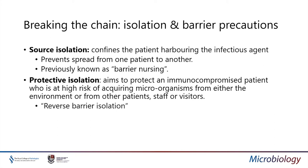Isolation and barrier precautions are another key pillar. Source isolation involves placing the patient harbouring the infectious agent in a single room, usually with an en-suite, to prevent spread of infection — previously known as barrier nursing. Barrier nursing patients on the ward using PPE is used when there are not enough side rooms. Protective isolation is here to protect an immunocompromised patient at high risk of acquiring microorganisms from the environment, patients, staff or visitors — previously known as reverse barrier isolation.